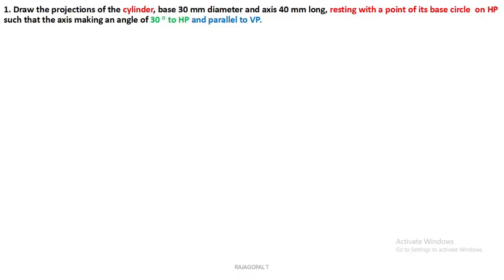Hello friends. In this video we will discuss projections of solids called cylinder. In the past videos we discussed projections of solid prism and pyramid with respect to different axis inclinations, like axis inclined to HP and parallel to VP, and axis inclined to VP and parallel to HP.